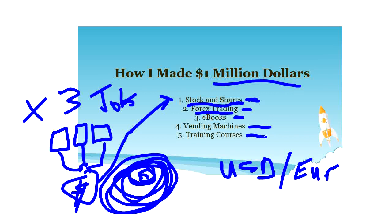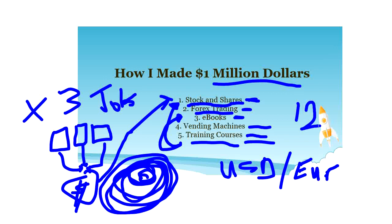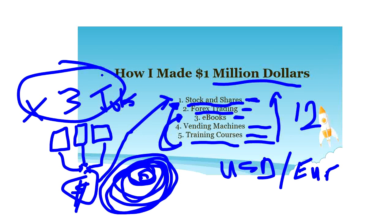Finally, I started to do training courses on how to invest in the stock exchange and how to do forex trading. I sold these training courses, and before I knew it, within 12 months, I had generated the one million dollars. The effort I would have put into those three jobs would have taken many many years, but with this five-step approach it basically generated me the one million dollars.